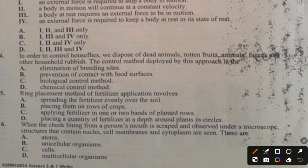Question 6. When the cheek lining from a person's mouth is scraped and observed under a microscope, structures that contain nuclei, cell membranes, and cytoplasms are seen. These are A. Atoms, B. Unicellular organisms, C. Cells, D. Mortal organisms. The answer to question 6 is C, cells.